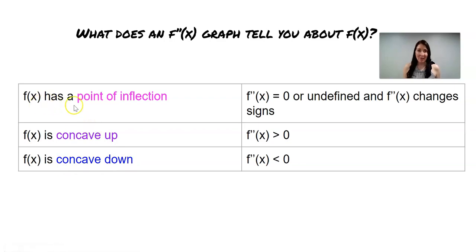First, I know that f(x) has a point of inflection where f''(x) either equals 0 or is undefined, and where f''(x) changes signs. f''(x) has to change signs in order for f(x) to have a point of inflection at that x value.